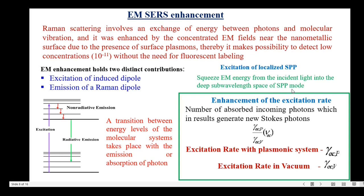The enhancement of the excitation rate is represented with the letter gamma — that is gamma_excitation at P, which is the excitation rate with the plasmonic system, and gamma_excitation at V, which is the excitation rate in vacuum. The ratio of these two gives the enhancement of the excitation rate — that is the number of absorbed incoming photons which in turn generate new Stokes photons.